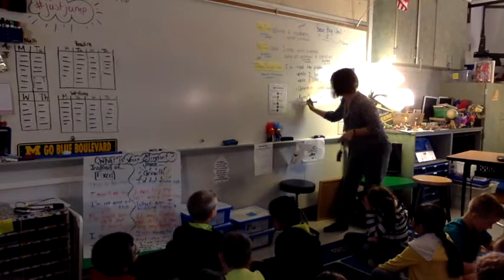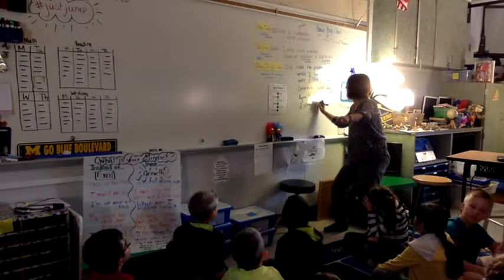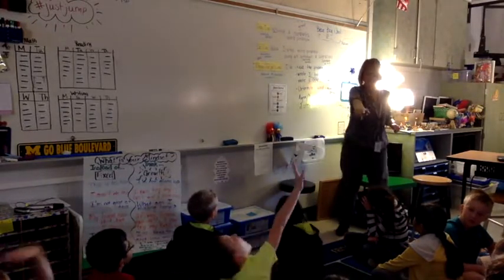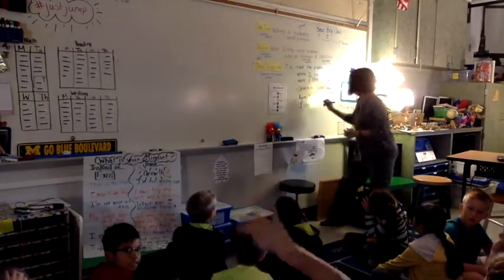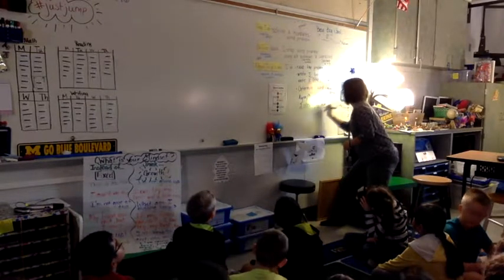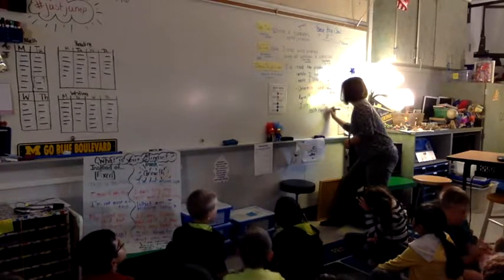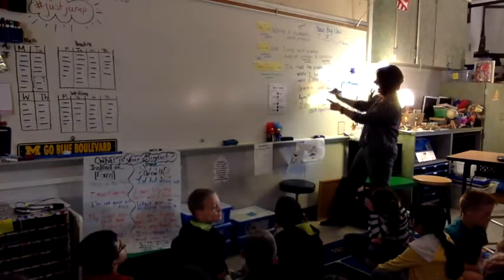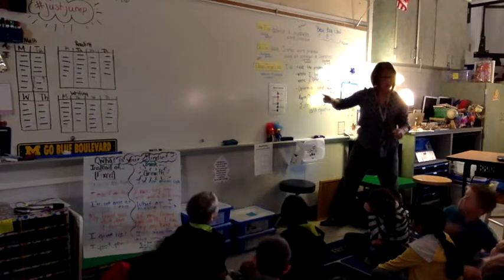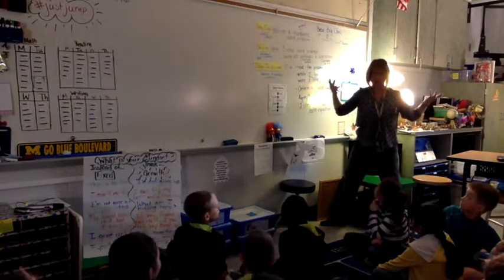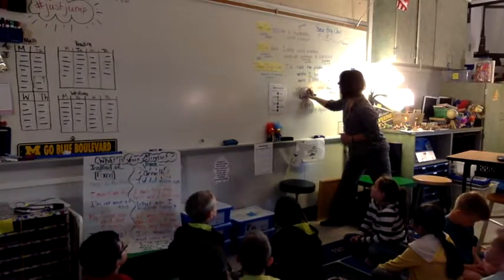Two strategies. There you go, Rachel. Two strategies. For both. So you only need two strategies on your paper? You need four. Why four? Because it's a two-step problem. So two strategies for each equation. Is that it? Yeah. Is there going to be an equation somewhere here? How many should you have? Two. Two equations.